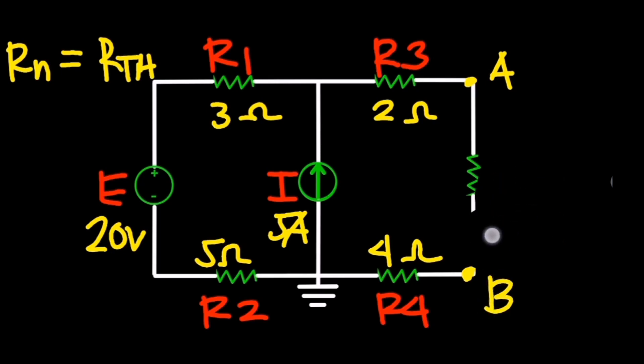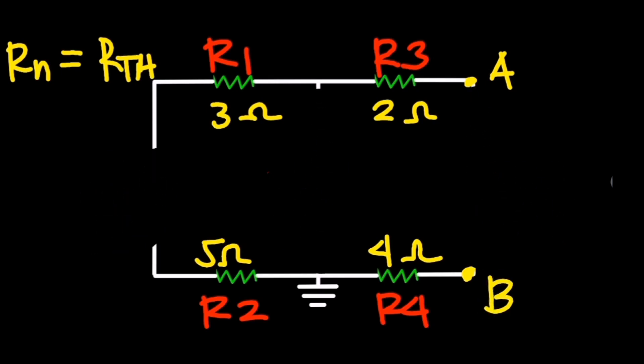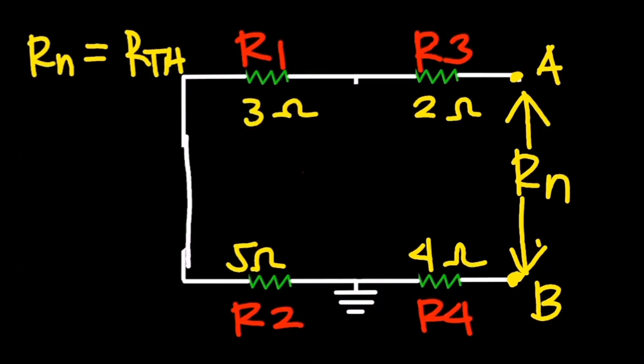Then remove the load RL, open the current source, and short the voltage source. This simple series connection reveals Norton's equivalent resistance, denoted as Rn, which is equal to Thevenin's equivalent resistance known as Rth.